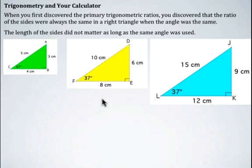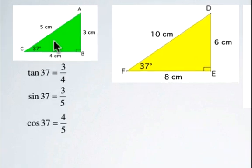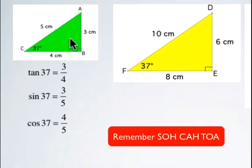As an example, if we look at this 37-degree angle in the first triangle, then the tan ratio for the 37-degree angle is opposite over adjacent, which is 3 over 4. For the sine ratio, it's opposite over hypotenuse, which is 3 over 5. And for the cosine ratio, the adjacent is 4 and the hypotenuse is 5, so it's 4 over 5.